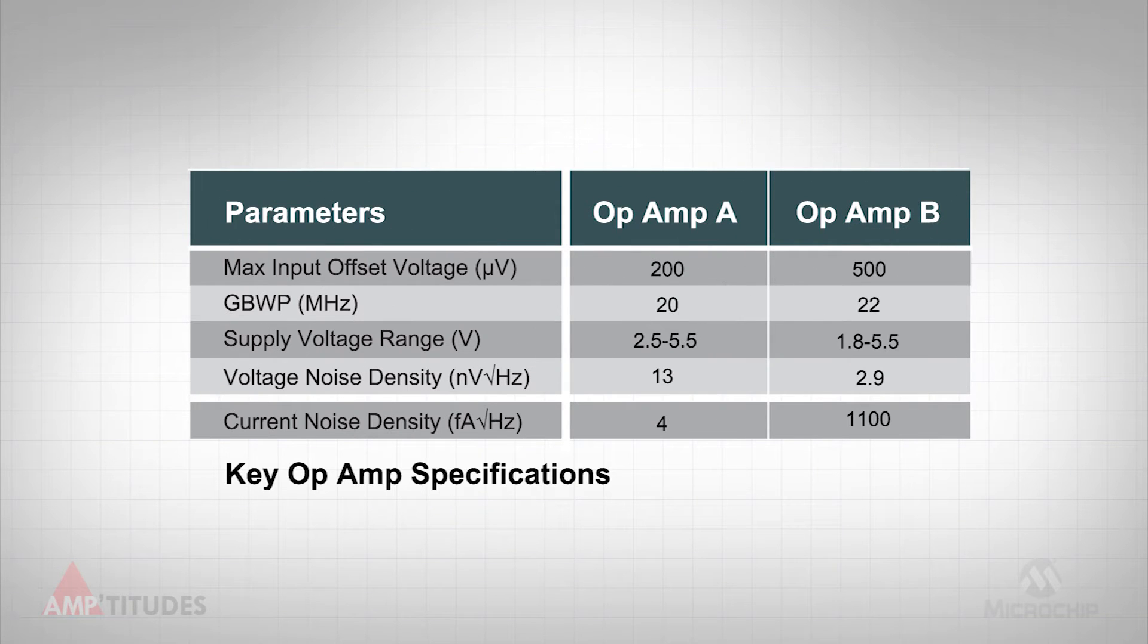This table highlights some of the key specifications for these two operational amplifiers. The two are similar in terms of offset performance, speed, and operating supply voltage. The noise specifications, on the other hand, vary considerably.